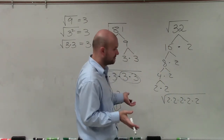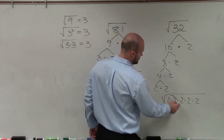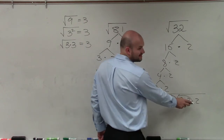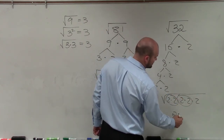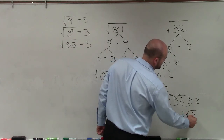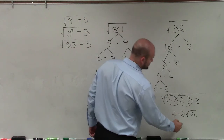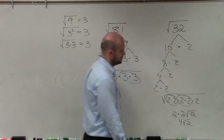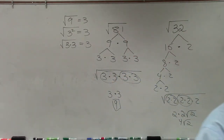Now we know that we can take out pairs of 2s. So I can do 1 pair, 2 pair — I can't take this out with a pair, so it remains on the inside. So then 2 times 2 is 4, so it's 4 square root of 2. And that's really all that you're doing.